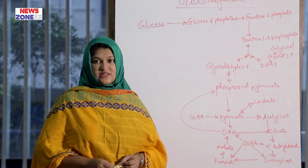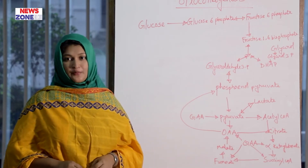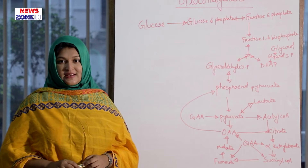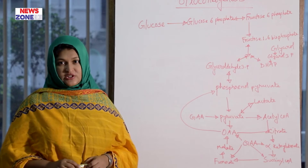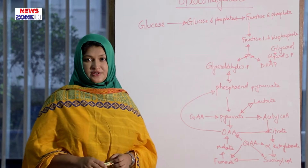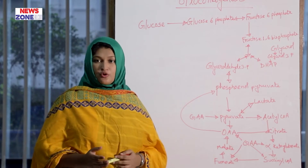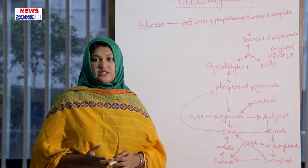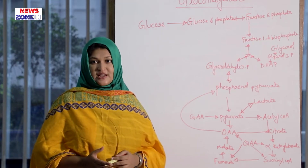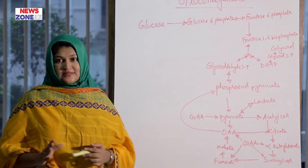What is gluconeogenesis? Gluconeogenesis is the synthesis of glucose from non-carbohydrate sources. Another name is neoglucogenesis. The non-carbohydrate sources may be glucogenic amino acids, pyruvate, lactate, intermediaries of the TCA cycle, glycerol, and propionyl-CoA.